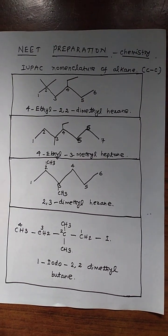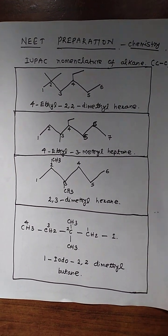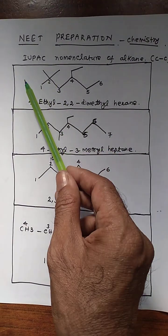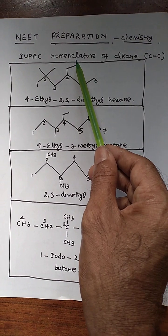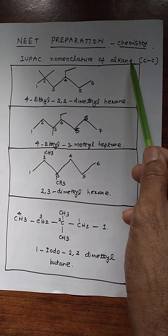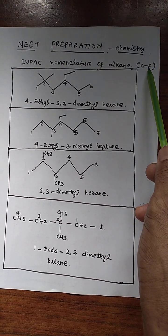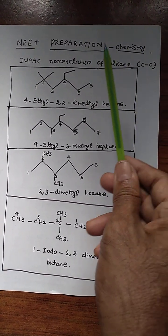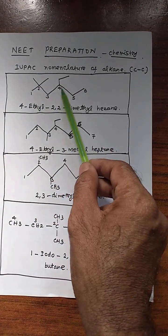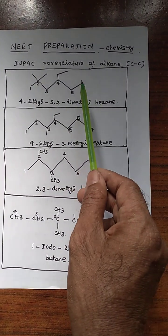Welcome to Sai Ram Arul channel. Meet Preparation Chemistry: IUPAC Nomenclature of Alkane. C single bond C — this is the structure given.